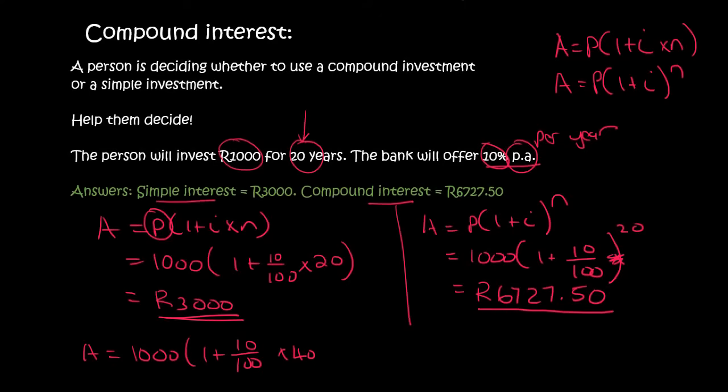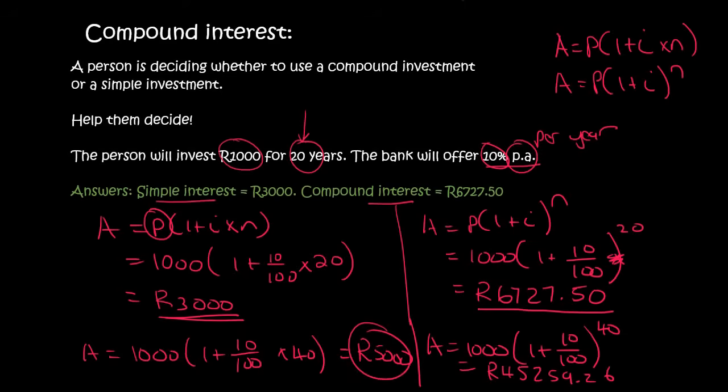If we do this for 40 years this person would earn only 5000 rand. If the compound interest person went for 40 years, whoa, 45,259 rand and 26 cents. So look at that guys, almost or more than nine times as much. Compound interest is very powerful over a long period of time.